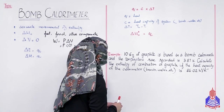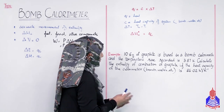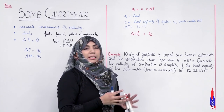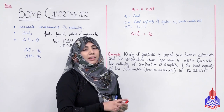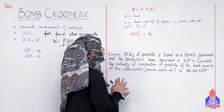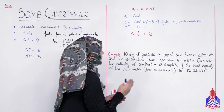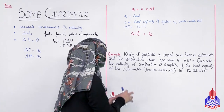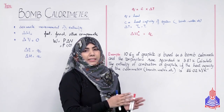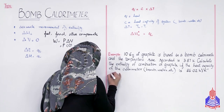Example: 10.6 grams of graphite is burnt in a bomb calorimeter and the temperature rise recorded is 3.87 Kelvin. Bomb calorimeter में जो sample as a fuel लिया था वो 10.6 grams of graphite है। Bomb calorimeter में sample size small लेते हैं - bulk amount नहीं लेते। Change in temperature 3.87 Kelvin आया है। हमसे पूछा जा रहा है: calculate the enthalpy of combustion of graphite if the heat capacity of the calorimeter (bomb + water) is 86.02 kilojoule per Kelvin.